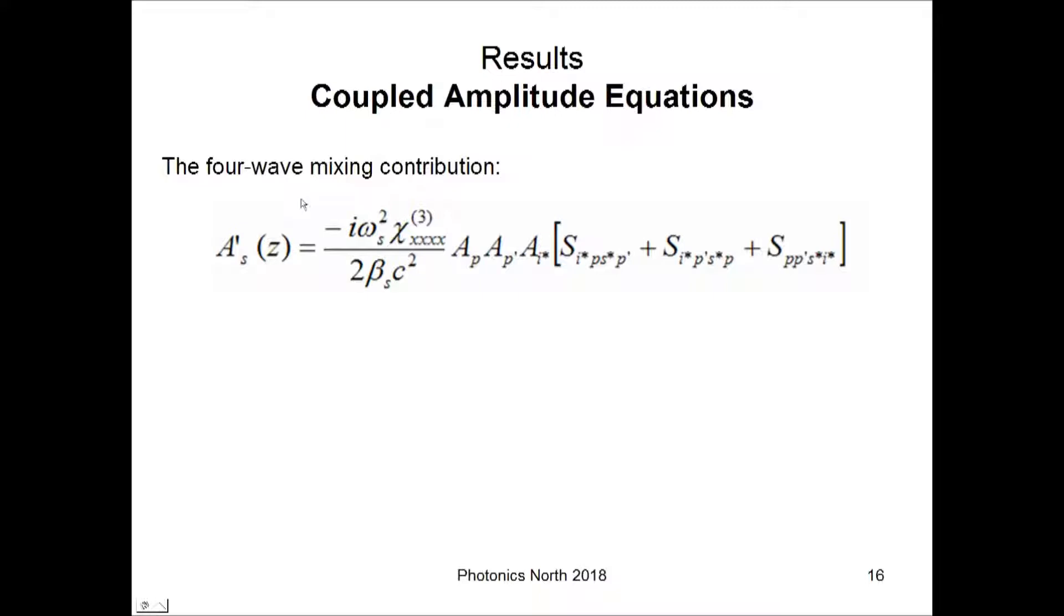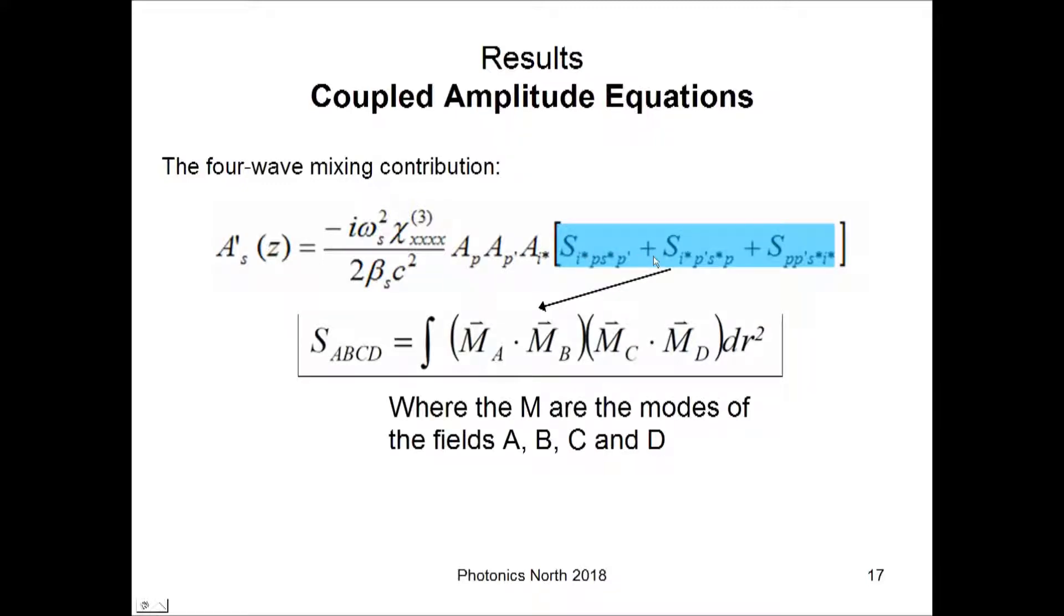Here are the coupled amplitude equations for the signal and for the idler if you exchange the s and i subscripts in this equation. The part here out front before the brackets is standard. So, the more interesting part are these three S terms. And each of these is an integral that looks like this. So, this is a product of the four mode fields. Each of these m's is the mode field for the corresponding beam. So, the product of each of these mode fields integrated over the transverse area.